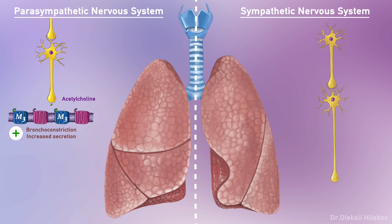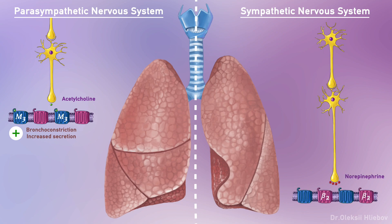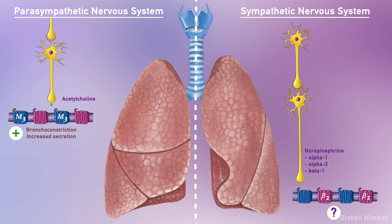Lungs are also innervated by postganglionic fibers of the sympathetic nervous system. Attention: postganglionic fibers of the sympathetic nervous system release norepinephrine, and norepinephrine acts on alpha-1, alpha-2, and beta-1 receptors. So the question is: how does norepinephrine produce bronchodilation if in the lungs we have beta-2 receptors and norepinephrine does not act on them? Here is the answer: direct sympathetic innervation of the lungs by nerve fibers is really not so important for regulation of bronchial tree or airways diameter.